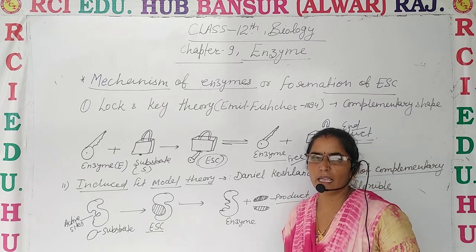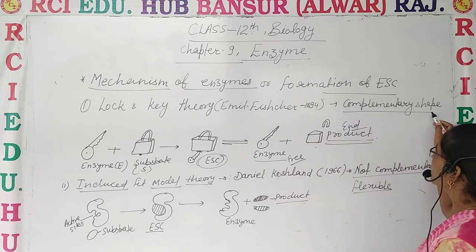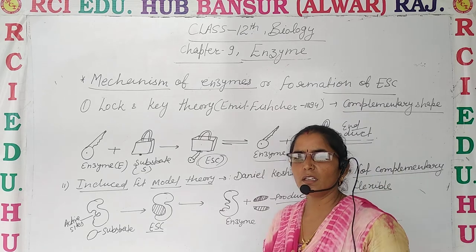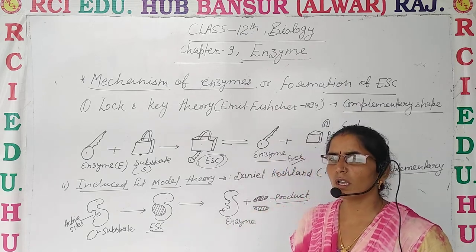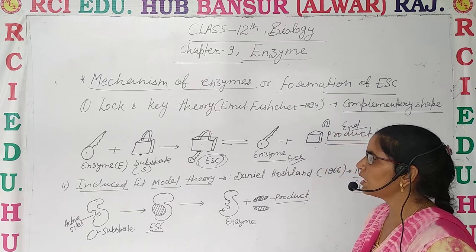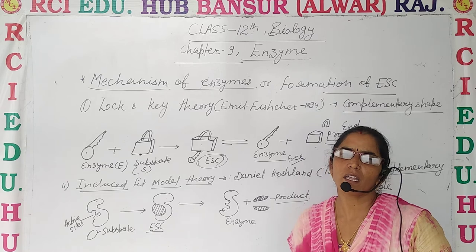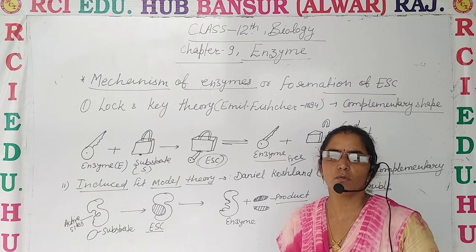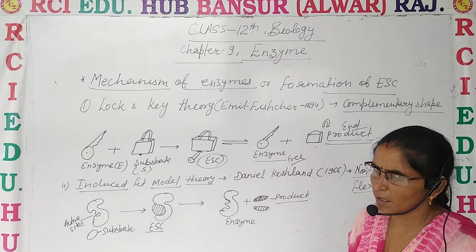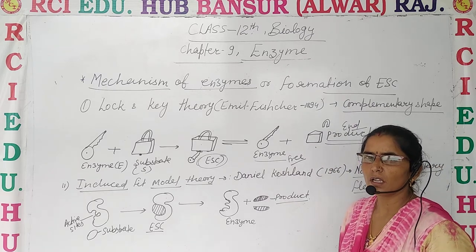What does this theory state? Emil Fischer said that the substrate and enzymes are complementary in their shape. Their shape is fixed and rigid — any specific enzyme can fit its specific substrate in its active site. The active sites cannot be changed; they are rigid and complementary to each other.